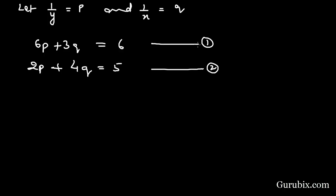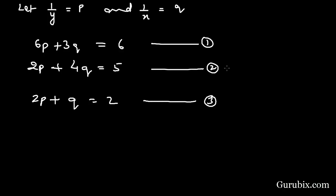We can divide equation number 1 by 3 on both sides, which gives us 2p plus q equals 2. Let this be equation number 3. Now we shall apply the elimination method to solve this pair of linear equations.